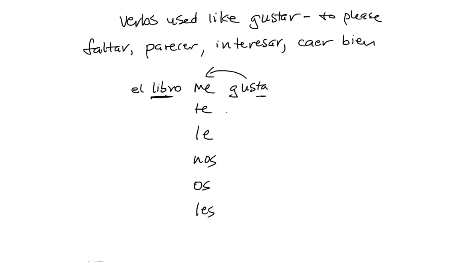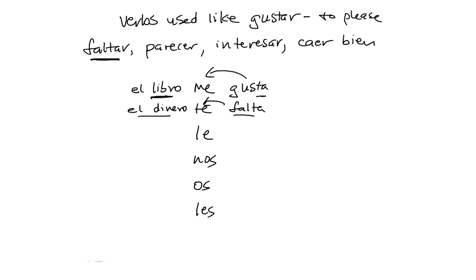Other verbs we can use like gustar include faltar, which means 'to lack.' So if you wanted to say something was lacking to you — in other words, you need something — for example, you are lacking money, you would say el dinero te falta. Money is lacking to you.